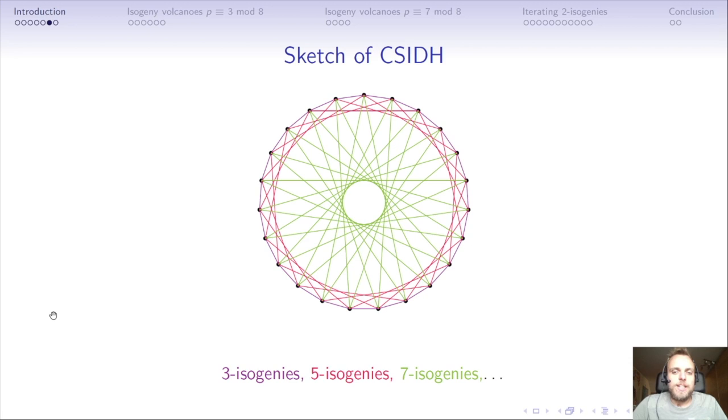Why do we want a graph for all these different degree isogenies in CSIDH? Because if you add enough of them, you end up with an expander graph which has rapid mixing properties. Even though there are 23 elliptic curves here, it doesn't take many steps to go from any elliptic curve to any other. For example, with at most two purple steps, two red steps, and two green steps, you can reach any elliptic curve from any other in this graph.